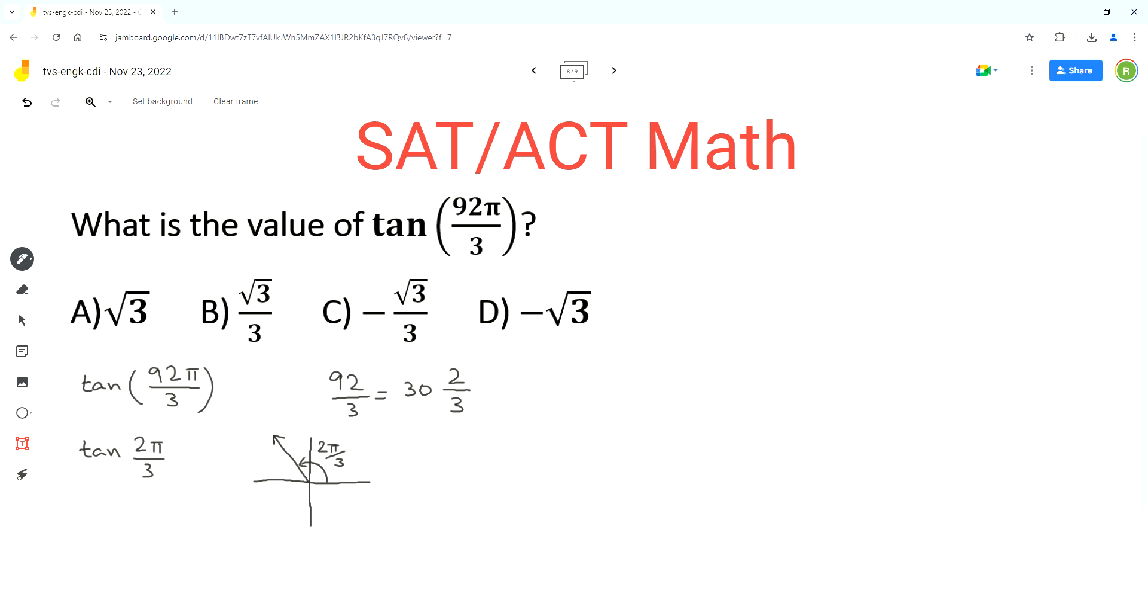As per the CAST rule or the ASTC rule, tan is negative in quadrant 2. The reference angle or the related angle for 2π over 3 is π over 3. So we can rewrite tan 2π over 3 as negative tan π over 3.